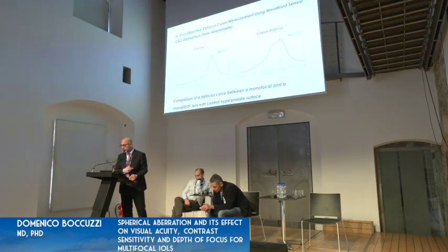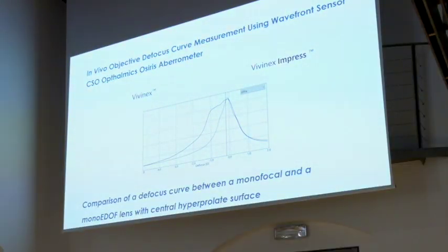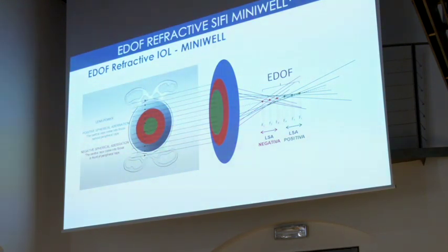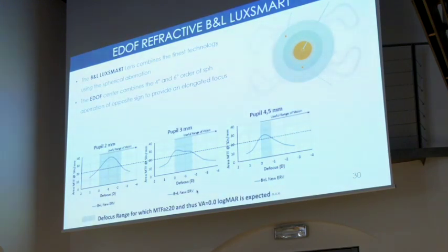The comparison between the EDOF-mono EDOF lens and the same monofocal lens shows a different shape of defocus curve obtained with simulation software. Another lens also uses a combination of positive and negative spherical aberration to increase LSA and multifocality. The Bausch & Lomb LuxSmart similarly plays with 4th and 6th order spherical aberrations of opposite signs to increase depth of focus.